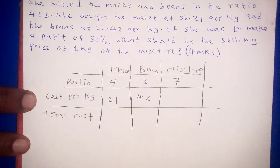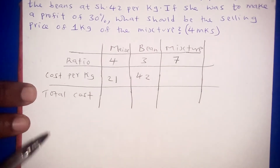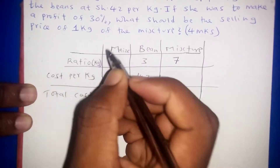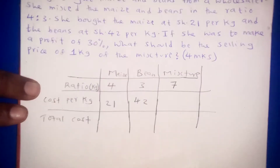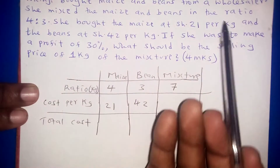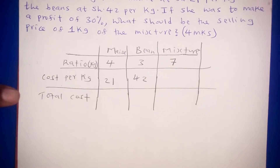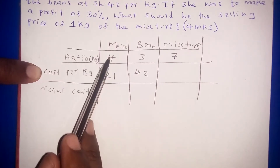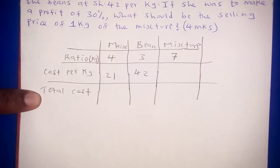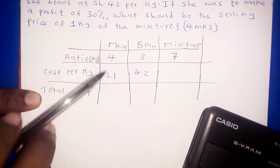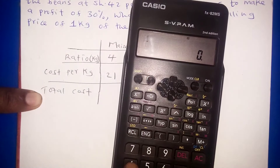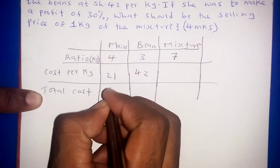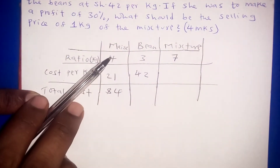To find the total cost, you take the ratio multiplied by the cost per kg. The ratio is in kilograms since we are dividing maize and beans in kilograms. So for maize: 4 kg multiplied by 21 shillings per kg gives 84 shillings — that is the total cost for this ratio of maize.